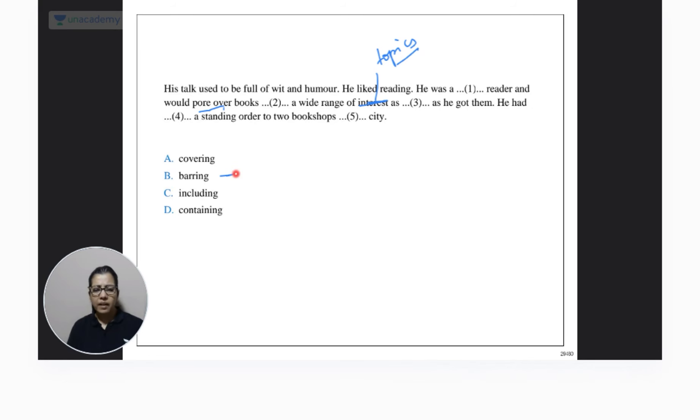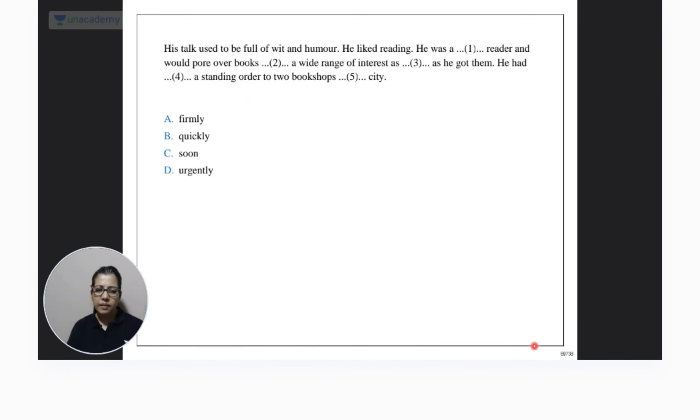Good. How can anyone pick barring? That means you don't know the meaning of barring, guys. Barring is what? Stopping somebody. Prohibiting somebody. Prohibiting. Yes, it is covering, of course, covering a wide range of topics. Covering a wide range of subjects. This. Next.